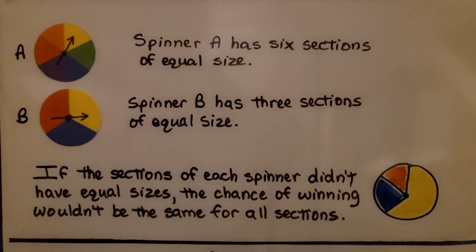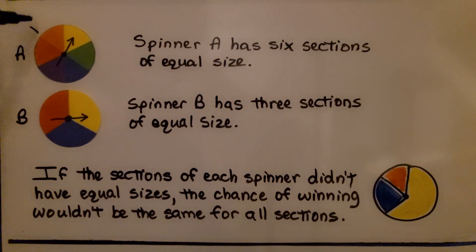Now, if you notice, for spinner A, it has six sections of equal size. They're all the same size. See that? Each section. And, spinner B has three sections of equal size. They're each one-third of this circle, aren't they? If the sections of each spinner didn't have equal sizes, like here, the chance of winning wouldn't be the same for all sections.